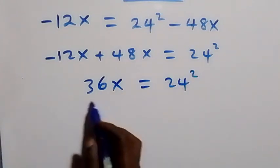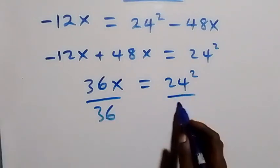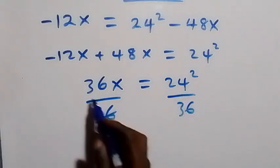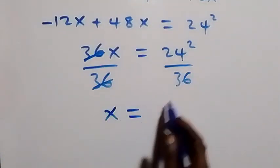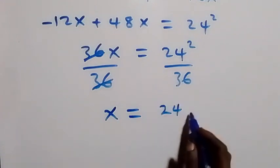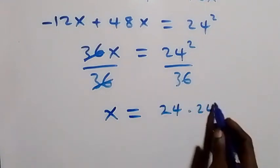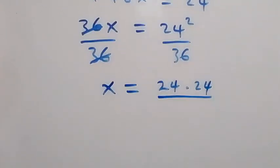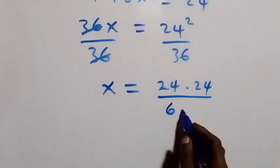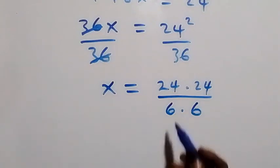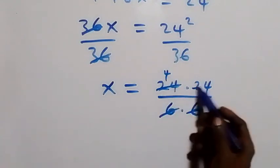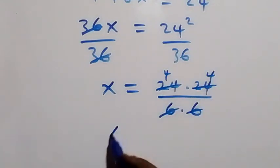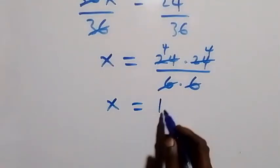We divide both sides by 36. So x equals 24 squared over 36, which is 24 times 24 over 6 times 6. Simplifying: 24 over 6 is 4, so we have 4 times 4, which is 16. Therefore x equals 16.